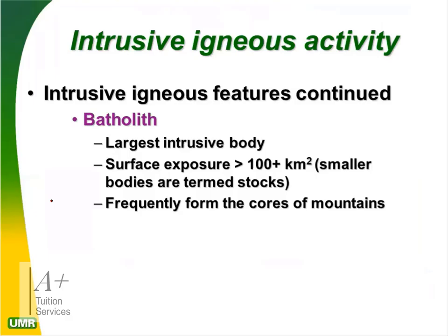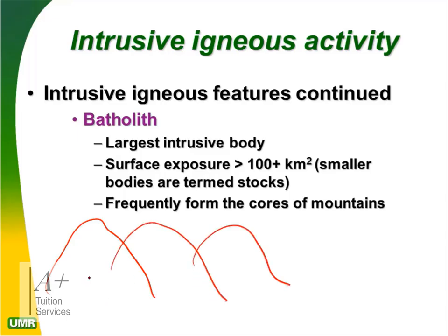A batholith is a large intrusive body with surface exposure of 100+ square kilometers; smaller bodies are called stocks. Batholiths frequently form the cores of mountain chains — they are found in the heart of mountains. Mountains are formed from volcanic material and plate movement — our next lesson is on mountains, and you'll understand why the Northern Range stands and why we have huge mountains like the Himalayas.